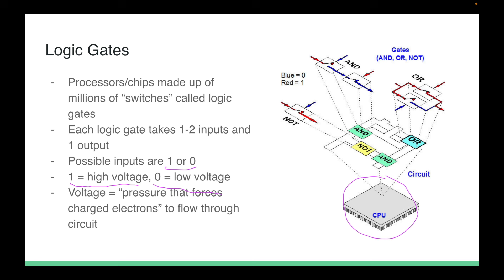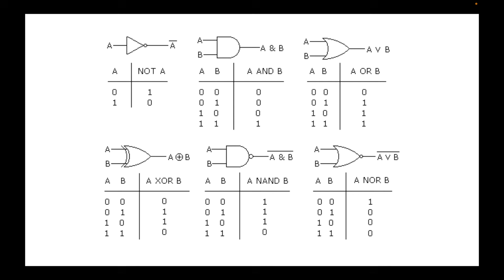These are six logic gates. The NOT gate outputs the opposite of whatever is put in — think of 0 as false and 1 as true. If you put in 0 you get 1; if you put in 1 you get 0. The AND gate: the only case where you get an output of 1 is when both inputs are 1. If there is any 0 (false) in the inputs, the output is 0.